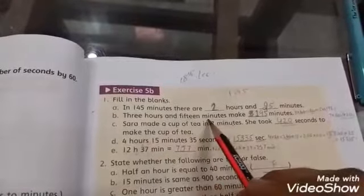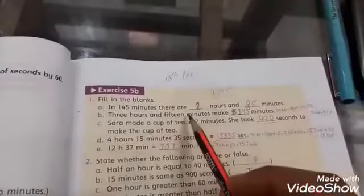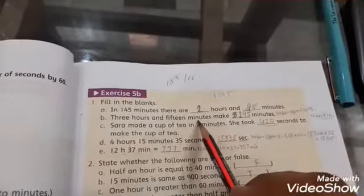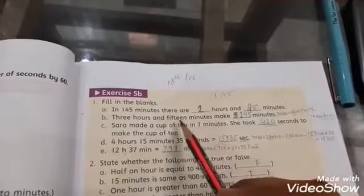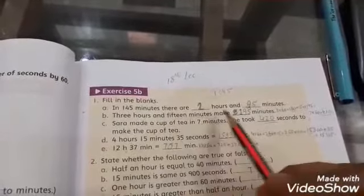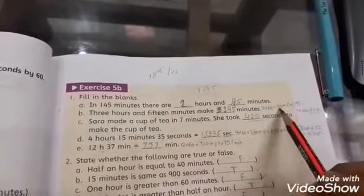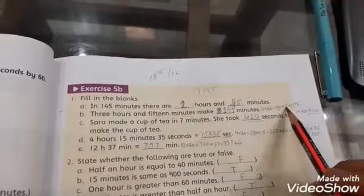Three hours and 15 minutes make dash minutes. One hour equals 60 minutes. Three multiply with 60 is 180 minutes, plus 15 minutes equals 195 minutes.